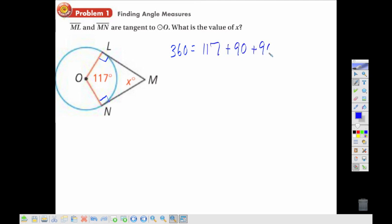I have 90 in two different places, and then I have my X. And so I know that those add up to 297, giving me an X equals 63.